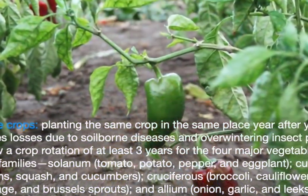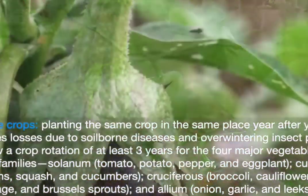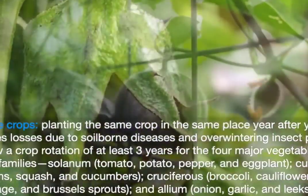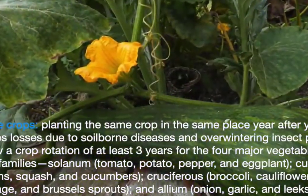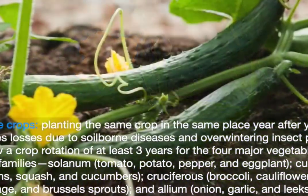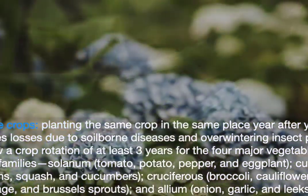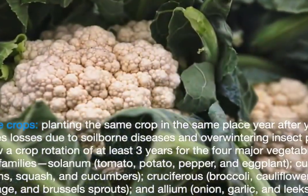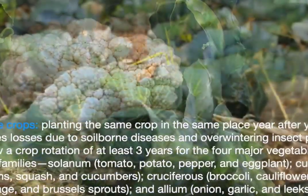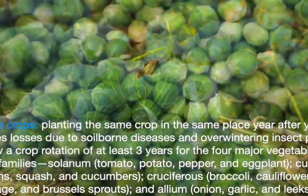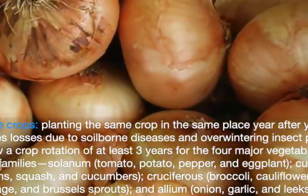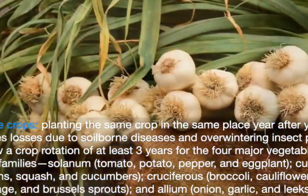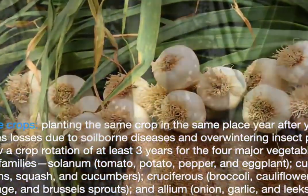The four plant families for crop rotation include: Cucurbit — melons, squash and cucumbers; Cruciferous — broccoli, cauliflower, cabbage and Brussels sprouts; and Allium — onion, garlic and leeks.